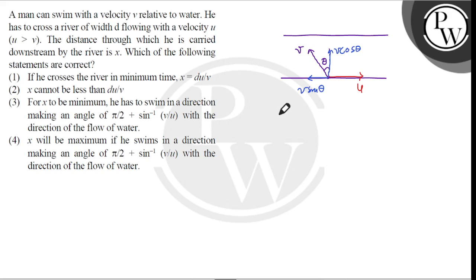So the net velocity in the downstream V dash is equal to U minus V sin theta. And time to cross river T is equal to width D divided by V cos theta.